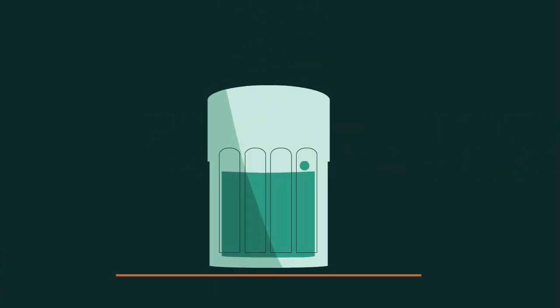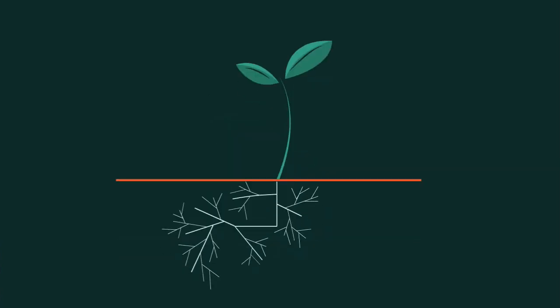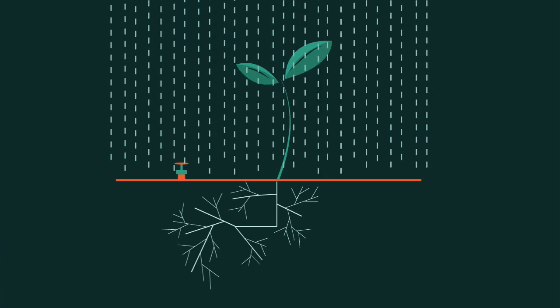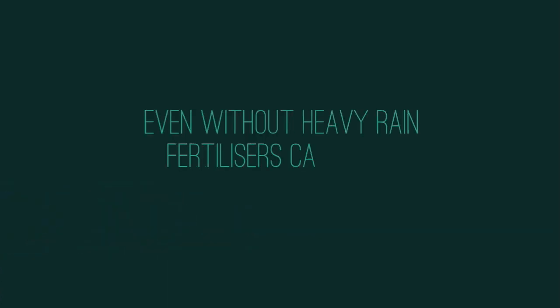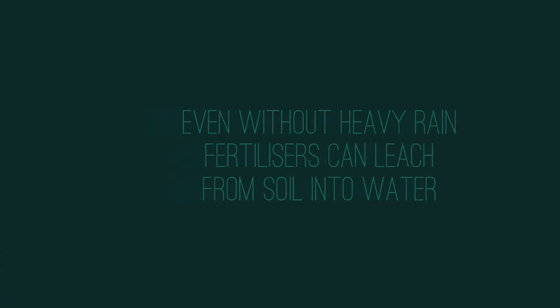Fertilizers must be dissolved in water before they can be absorbed by plants through their roots. This can happen through manual watering or rainfall. Heavy rainfall, however, can wash dissolved fertilizers into large bodies of water such as rivers and lakes. In fact, even without heavy rain, dissolved fertilizers can still leach from soil into water.